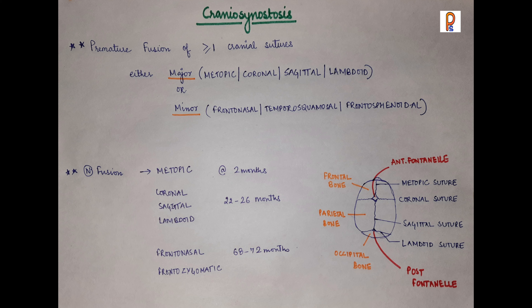Looking at normal fusion times: the metopic suture, which joins both frontal bones, usually fuses by 2 months. Then we have the coronal, sagittal, and lambdoid sutures. These major sutures usually fuse by 22 to 26 months. The minor sutures like frontonasal and frontozygomatic fuse around 68 to 72 months. So if bone ossification occurs before the normal age, we call it craniosynostosis.